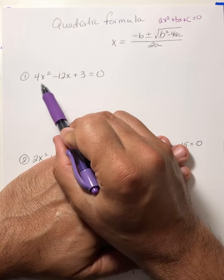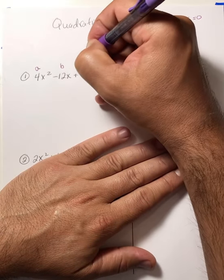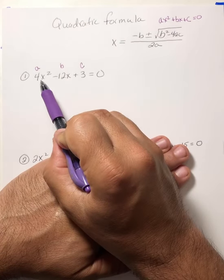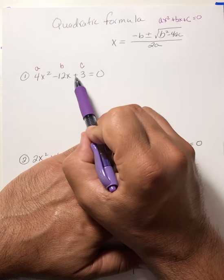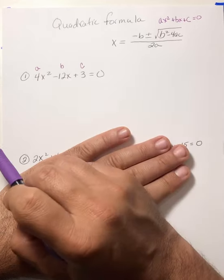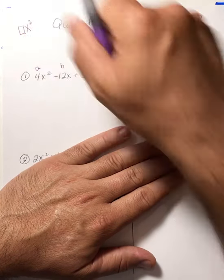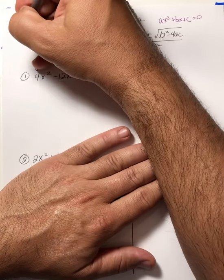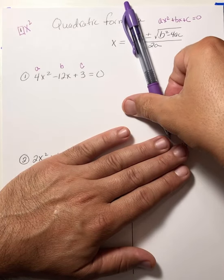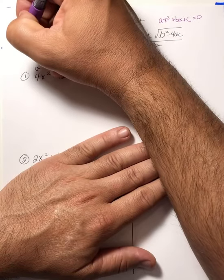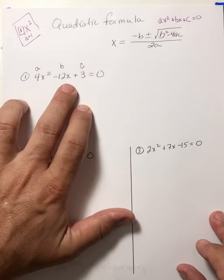Let's solve this quadratic. Remember: this is your a, this is your b, this is your c. A is always the coefficient of the x squared, b is always the number in front of x, c is the last number. And don't forget, if there's no number in front of x squared, always put a 1. So you always have an a value of 1 if you need it.